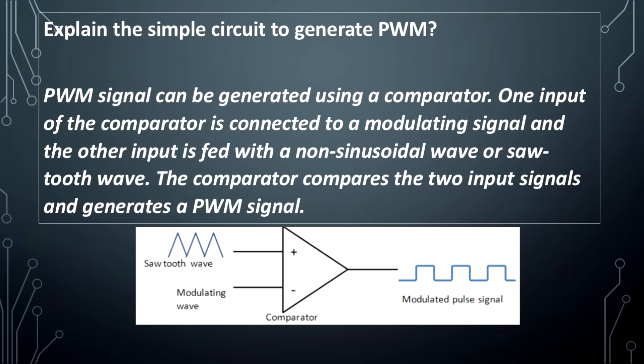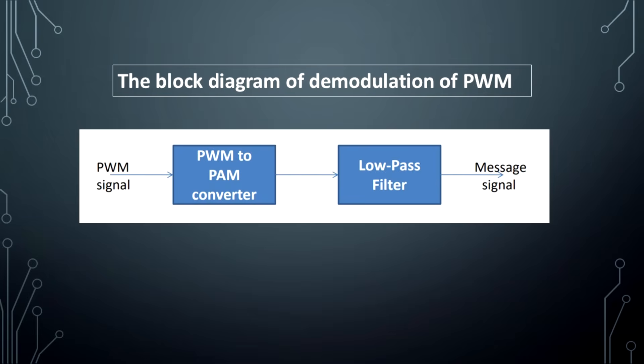Explain the simple circuit to generate PWM. A PWM signal can be generated using a comparator. One input of the comparator is connected to a modulating signal and the other input is fed with a non-sinusoidal wave or sawtooth wave. The comparator compares the two input signals and generates a PWM signal. The block diagram of demodulation of PWM is given below.